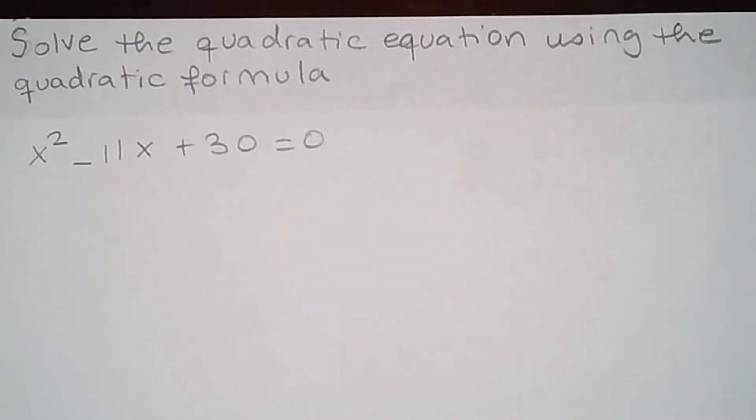Solve the quadratic equation using the quadratic formula. My equation is x squared minus 11x plus 30 equals 0.